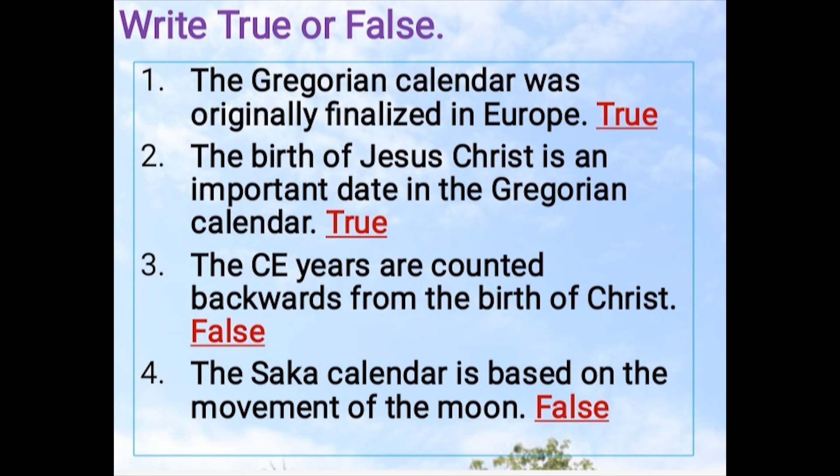Number 4: The Saka calendar is based on the movement of the moon. The answer is False. The correct statement is: the Saka calendar is based on the movement of the earth around the sun.